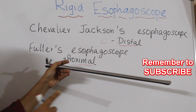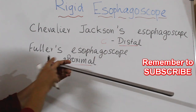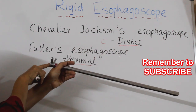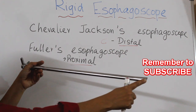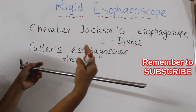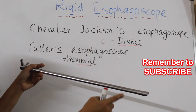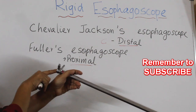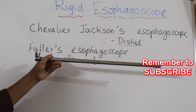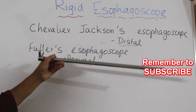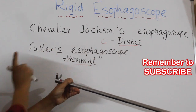Which one is better — distal or proximal light source? Definitely distal illumination, towards the mucosa, gives better illumination. It is better than proximal illumination. So the two types of rigid esophagoscopes are Chevalier Jackson and Fuller's.